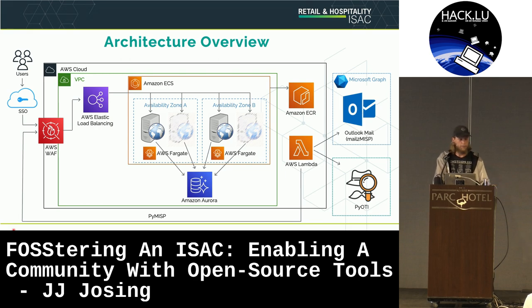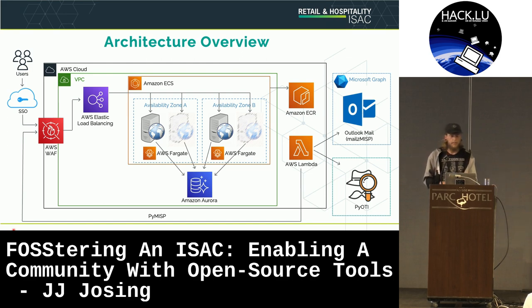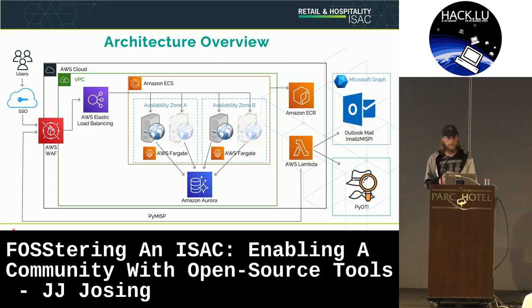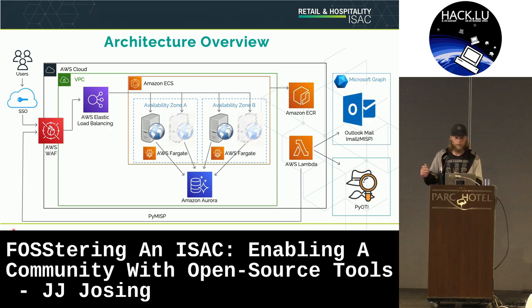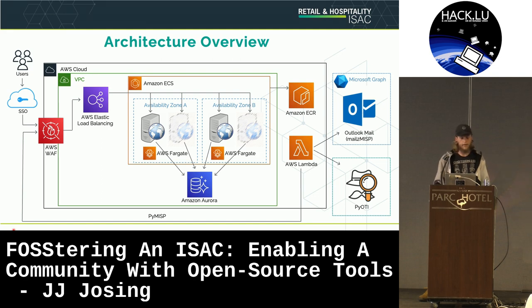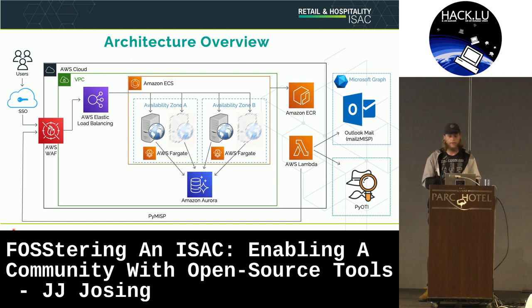For our image build process: it clones the repo and pulls in any needed submodules like our RHISAC taxonomy, our Threat Actor Galaxy, and our Fraud Galaxy. It then gets the needed AWS credentials, logs into the Elastic Container Registry, builds our Docker image with appropriate tagging, pushes it back to ECR, stops an existing MISP task, launches a new one, and ensures stability of the new images. We have a pre-production environment and a production environment that are identical — we test in pre-prod, and once we're good there, we push it to production.